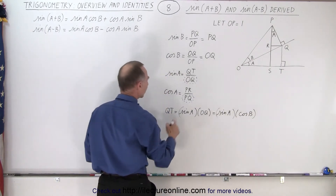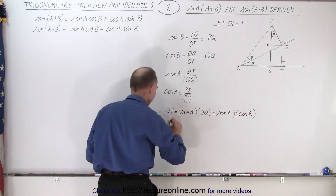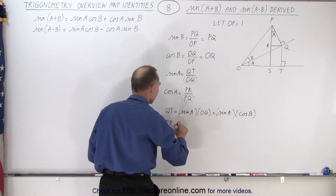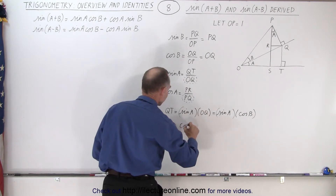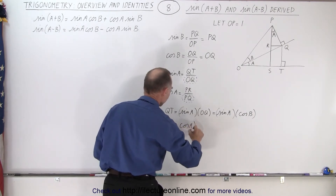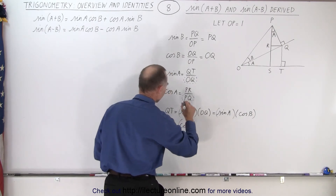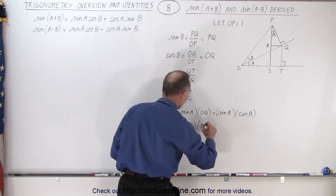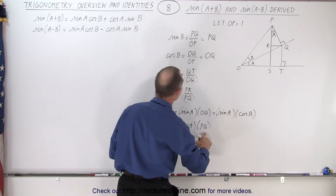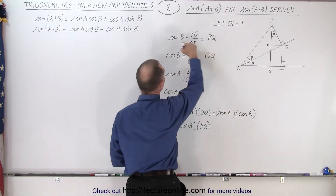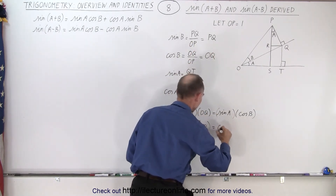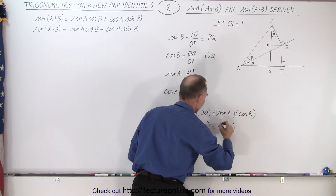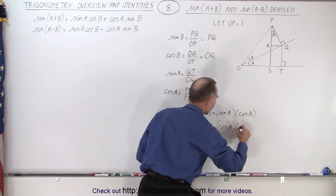Likewise, we can solve for PR, which is equal to the cosine of a times PQ. And PQ is defined as the sine of b, so this is equal to cosine a times sine b.